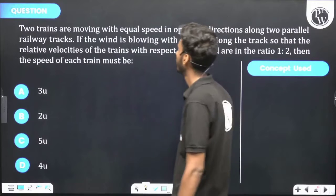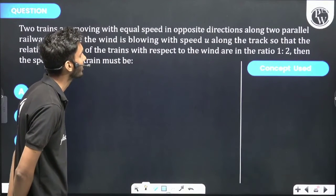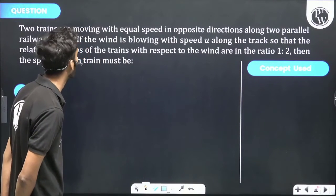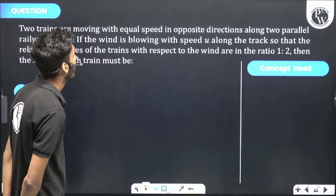Let's see the question. Two trains are moving with equal speed in opposite directions along two parallel railway tracks. If the wind is blowing with speed u along the track,